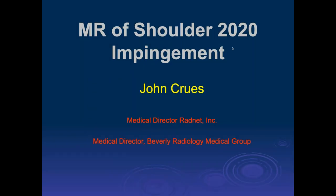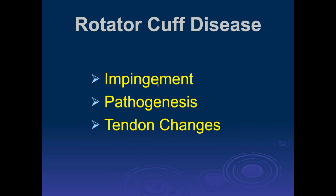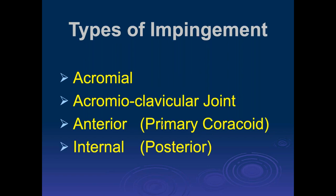Continuing our discussion of the shoulder, we'll move on to impingement. We'll cover the different types, starting with some that were popular a few years ago but are less popular now. We'll discuss pathogenesis and how impingement affects the tendons, then move into tendon changes. Several types of impingement have been described: acromial impingement due to acromion shape, impingement at the AC joint—collectively called outlet impingement—then anterior impingement (primary coracoid impingement) and internal impingement, often called posterior impingement, typically seen in overhead athletes.